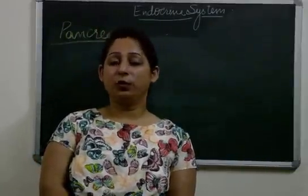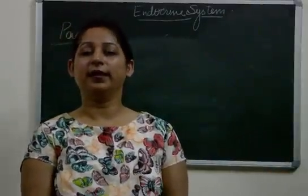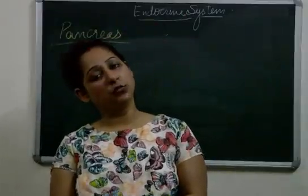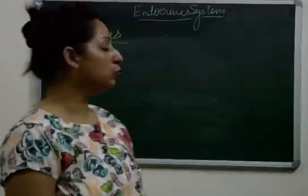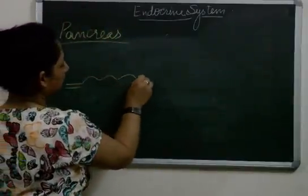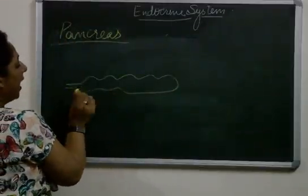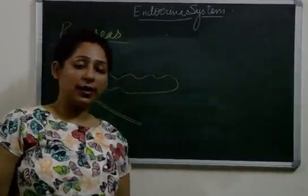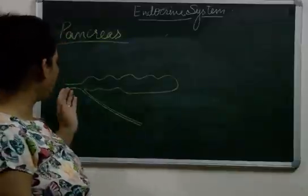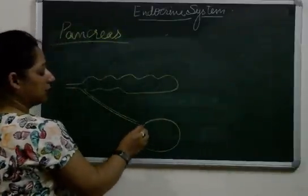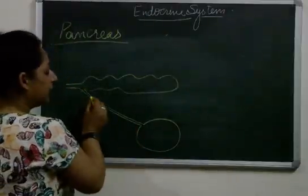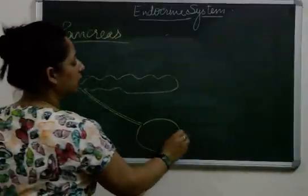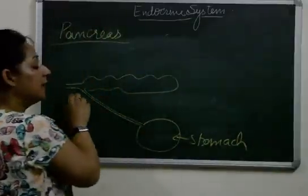In this video, I'll be explaining the endocrine gland — the pancreas. In an earlier video, I mentioned that the pancreas acts as merocrine in nature, meaning both exocrine and endocrine. Pancreas are leaf-like structures in our body. Exocrine glands have ducts, and the pancreas also has ducts — called the pancreatic duct — which pours digestive juices into the stomach, making it act as an exocrine gland.